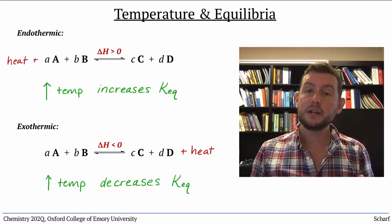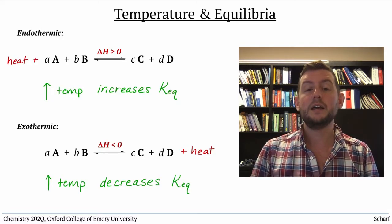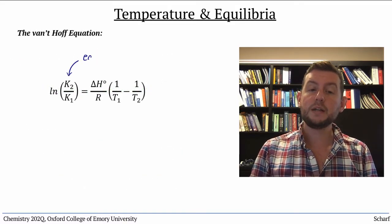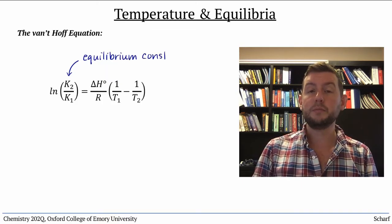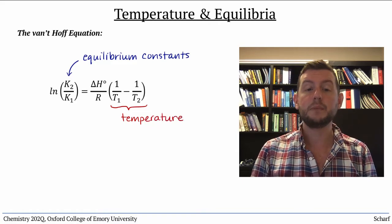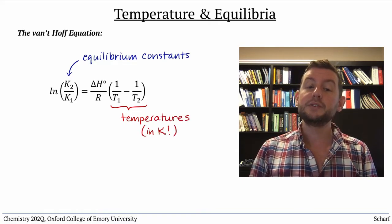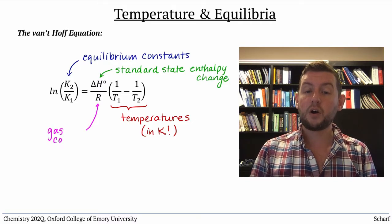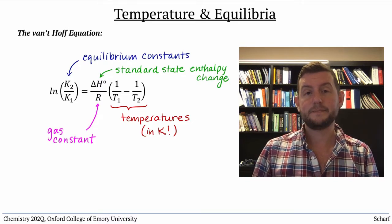The relationship between reaction enthalpy, temperature, and the equilibrium constant is expressed in the Van't Hoff equation, where K1 and K2 are the equilibrium constants at temperatures T1 and T2 measured in Kelvin, delta H is the standard state reaction enthalpy, and R is the gas constant.